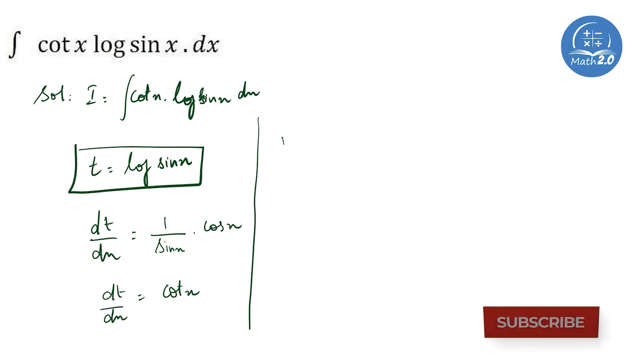The next step, dt equals cot x dx. So, I will be getting instead of this cot x dx, I am going to substitute dt.